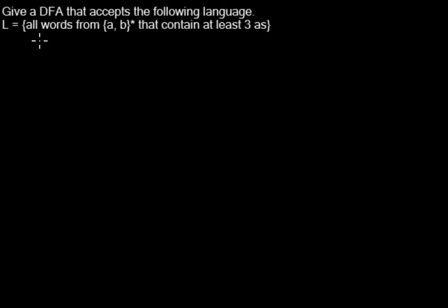In this case it's all words over the alphabet a,b that contain at least three a's. So we need some kind of counter in this deterministic finite automaton before a word can be accepted.